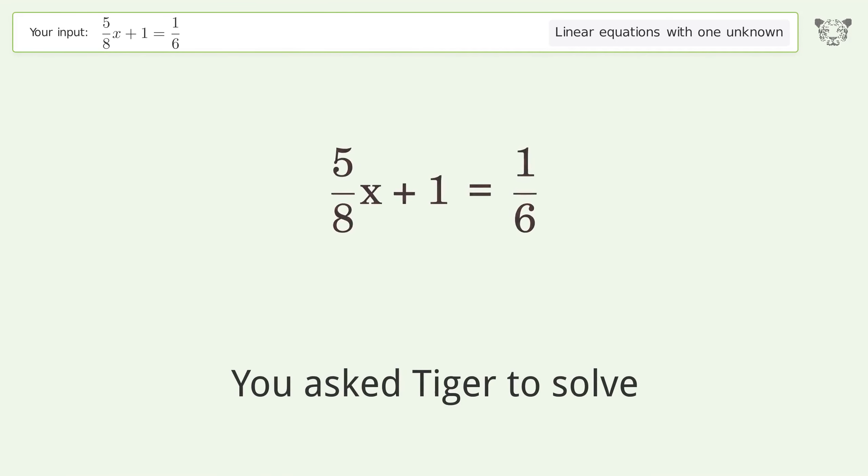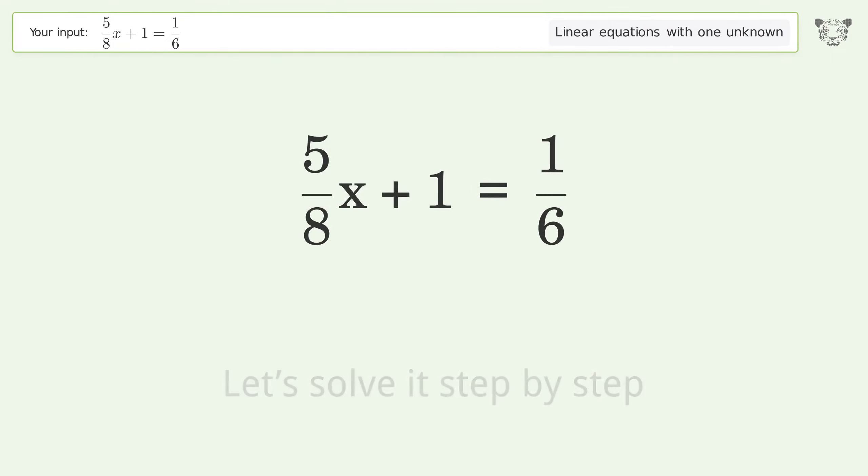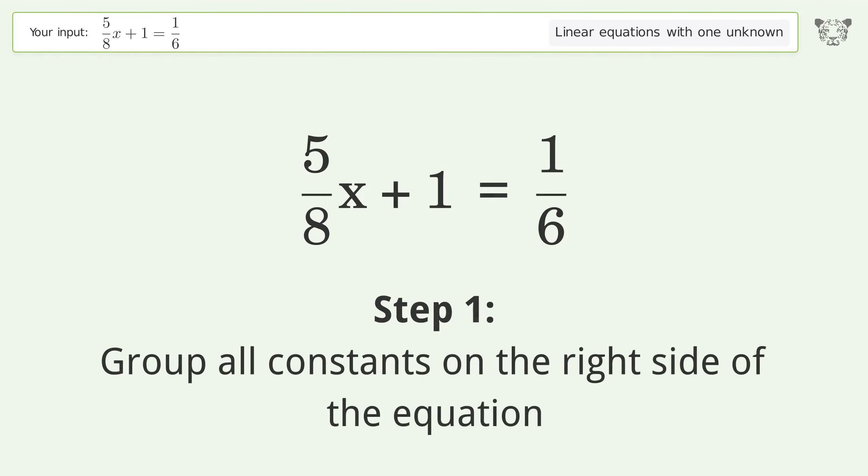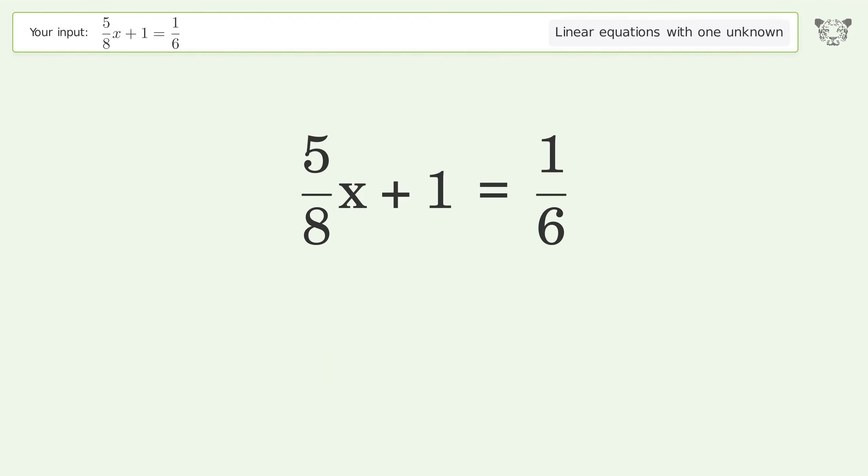You ask Tiger to solve this. It deals with linear equations with one unknown. The final result is x equals negative 4 over 3. Let's solve it step by step. Group all constants on the right side of the equation. Subtract